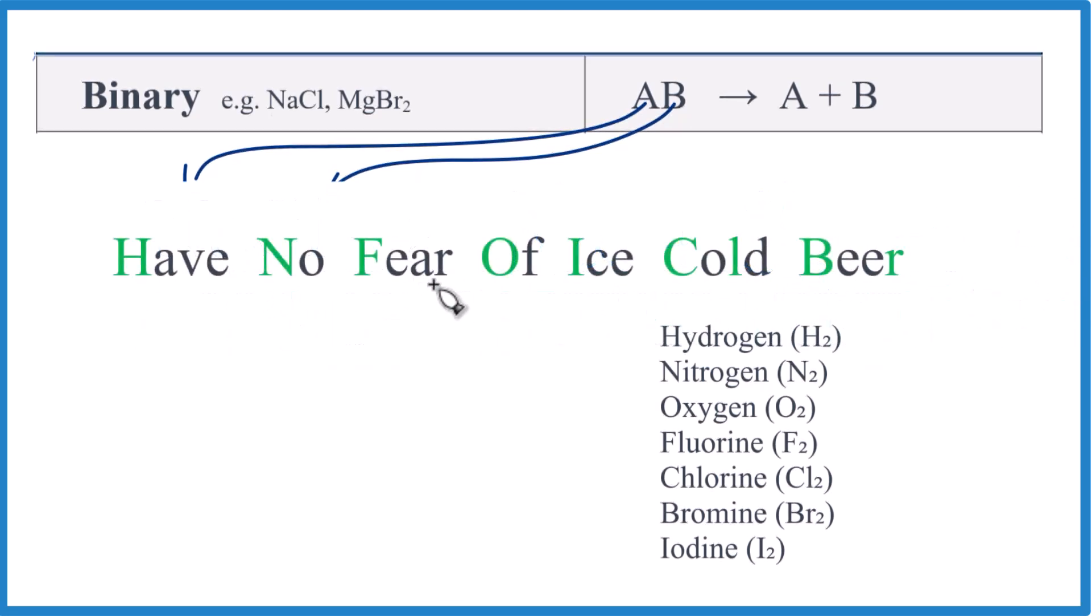One way you can do that is with this little mnemonic. Probably not the best K-12 mnemonic, but have no fear of ice-cold beer. H2, N2, F2, O2, I2. We have our Cl2, and then our Br2. So if you know that, you'll be able to remember these diatomics pretty easily.